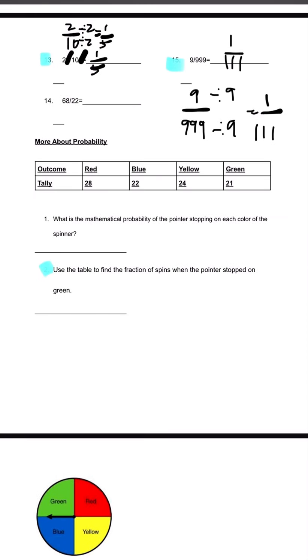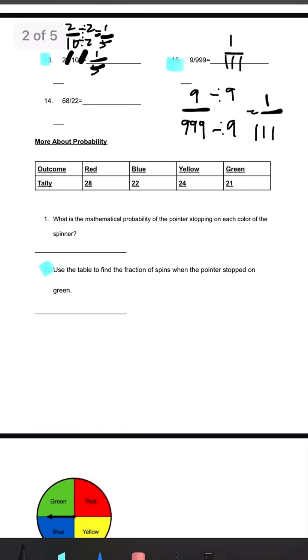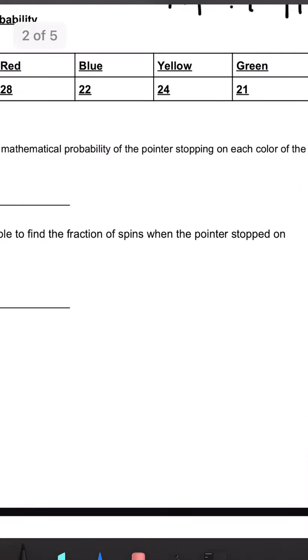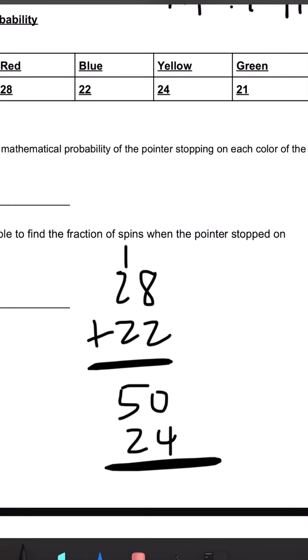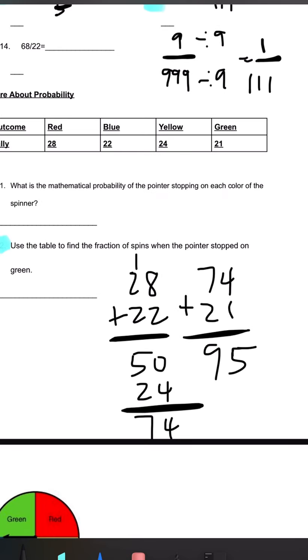Number 2, use the table to find the fraction of spins when the pointer stopped on green. So first, we're going to add up all of our outcome tallies. So we have 28 plus 22, and we know that is 50. Next, we're going to add 24. We know that that is 74. And then we're going to add 21 and we get 95. We're only going to look at green. So we have 21 over 95 is our answer.